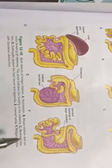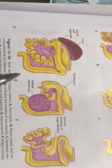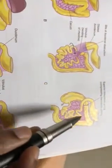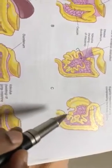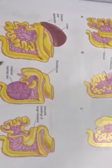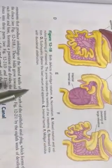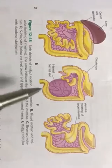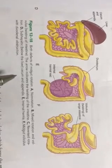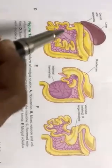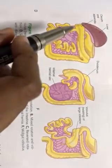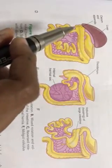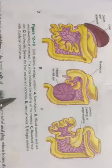Reversal rotation is C — everything is coming anterior. And then the next one is subhepatic, which is D. Look at this: the cecum is present just below the liver. That is subhepatic cecum.